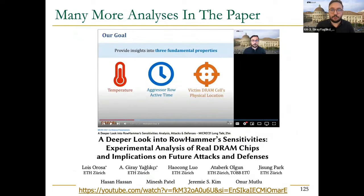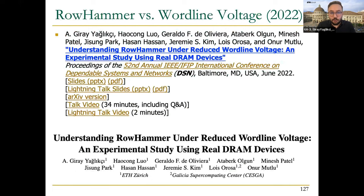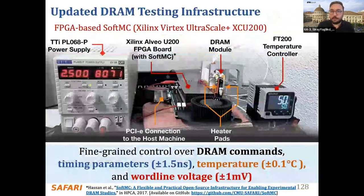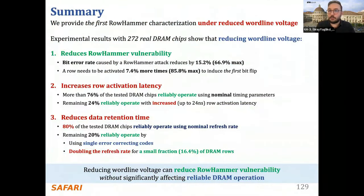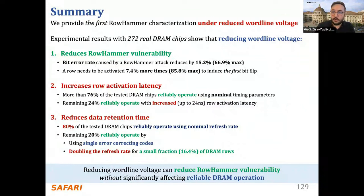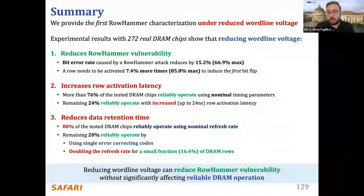We also have a paper published at DSMM last year showing rowhammer's relationship to voltage. It turns out that reducing voltage on the wordline reduces interference, thereby reducing rowhammer vulnerability — at the cost of increasing row activation latency and data retention time. As a result, we can reduce rowhammer vulnerability by operating DRAM at lower voltage, though this can affect reliable DRAM operation, but the effect is not very significant as shown in the paper.